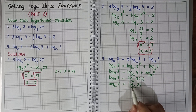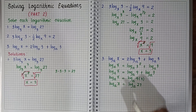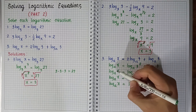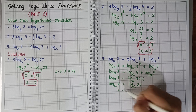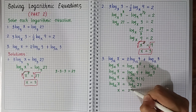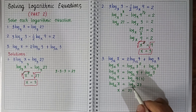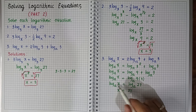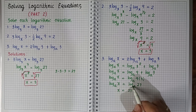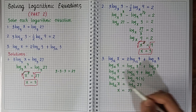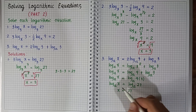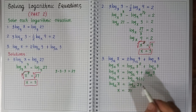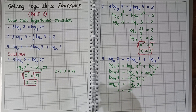Now we can see that both sides have the same logarithm form with the same base A. So we drop off the logarithms and equate the arguments: x equals 27.